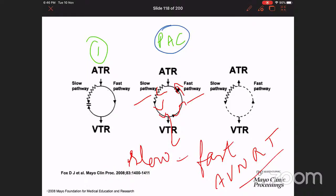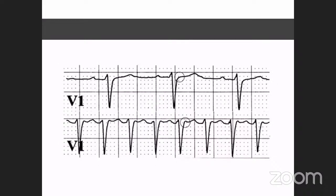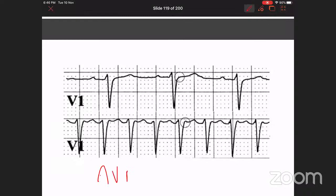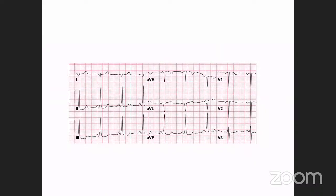The P wave, if it occurs, is usually buried within the QRS complex or occurs slightly after the QRS complex. It is very rare to see a P wave just before the QRS in a slow-fast pathway. A characteristic finding in AVNRT is a pseudo R wave — a small positive wave seen after the QRS complex in V1. This is actually the P wave occurring slightly after the QRS complex. Pseudo R wave is typical of AV nodal reentrant tachycardia.